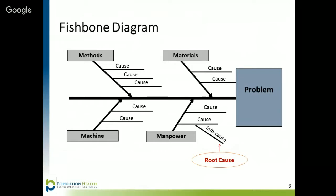A problem statement goes at the head of the fish, and the causes of the problem are broken down into four different categories representing the bones of the fish. This diagram uses the four M's as categories: methods, materials, machine (which is technology), and manpower. You can also use the four P's as categories: policies, procedures, plant, technology, and people. As you brainstorm possible causes of the problem with your team, list each cause under the appropriate category. It isn't necessary to spend too much time deciding which category something goes into; what is important is that everyone's ideas on causes of the problem are represented on the diagram.